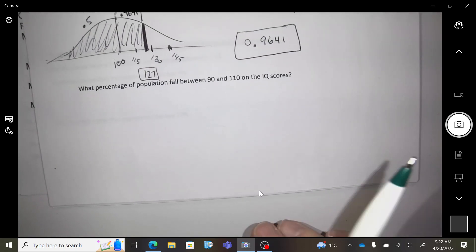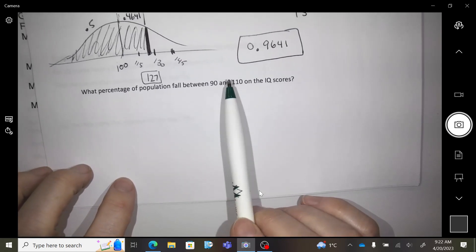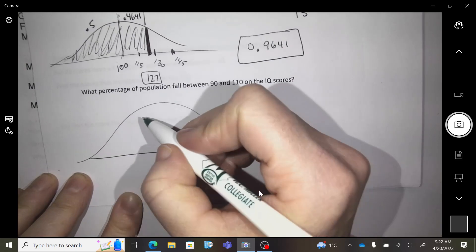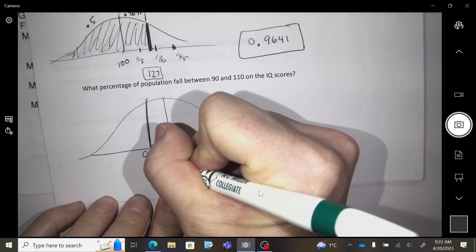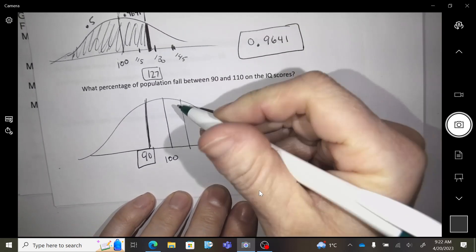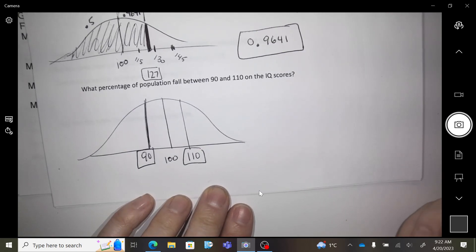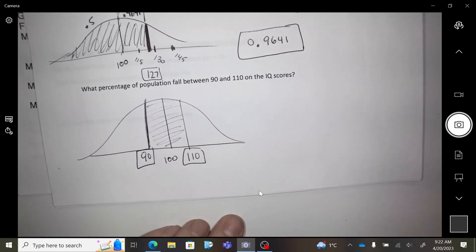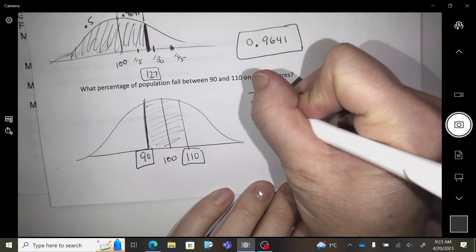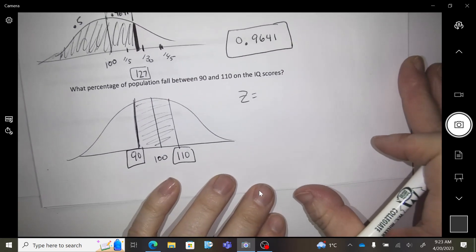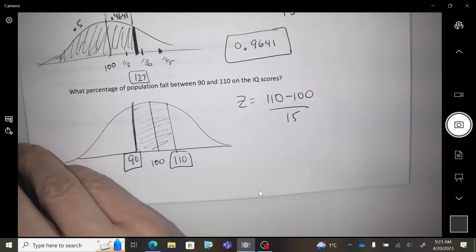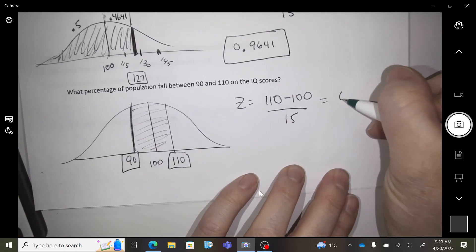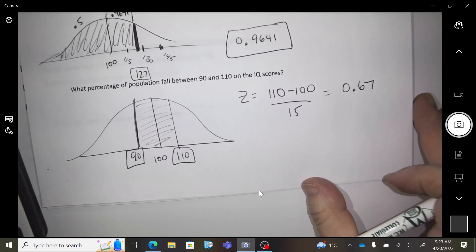Okay, let's try another one. What percent of the data falls between a score of 90 and 110? So 100 is right in the middle. I'm going to put a 90 below it and 110 above it, and then I want to know what percent is in that. So let's find the z-scores. The z-score equals 110 minus 100 over 15.